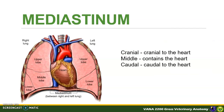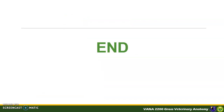The mediastinum is the cleft or wall formed by the contact between the two mediastinal pleura. Structures cranial to the heart are located at the cranial mediastinum. The heart itself is at the middle mediastinum, while structures below the heart are located in the caudal mediastinum. That ends our discussion on Module 6. After finishing this lecture, you are now ready to take the assessment prepared about the respiratory system.